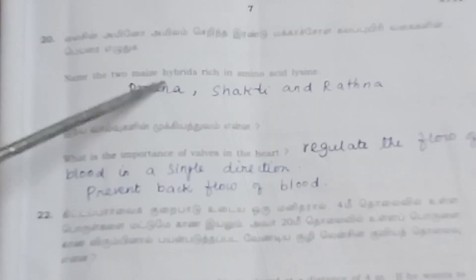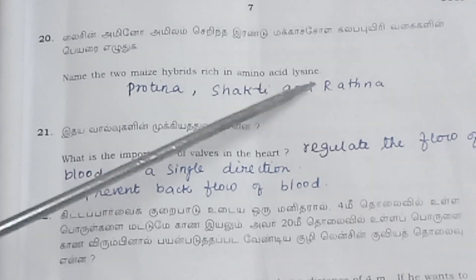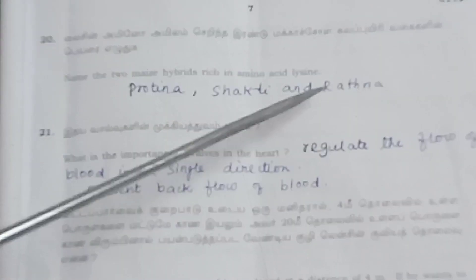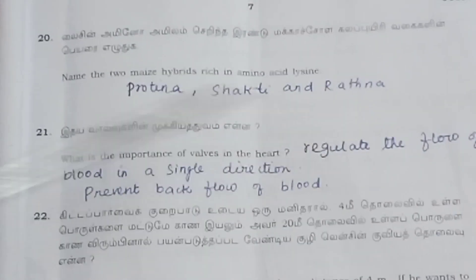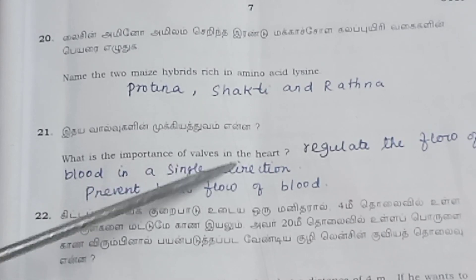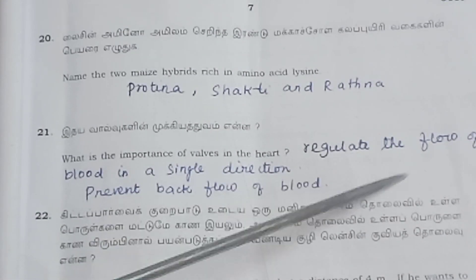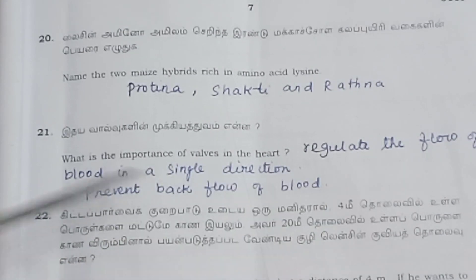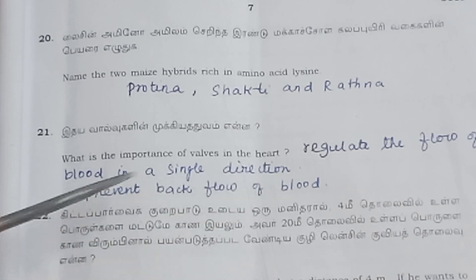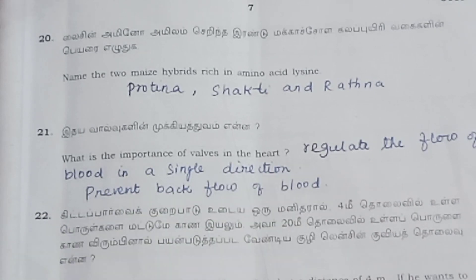Question 20: Name mice hybrids rich in amino acids — lysine, crotina, shakti, and ratna. What is the important valve in the heart? It regulates the flow of blood in a single direction and prevents the backflow of blood.